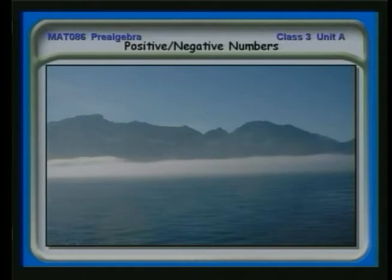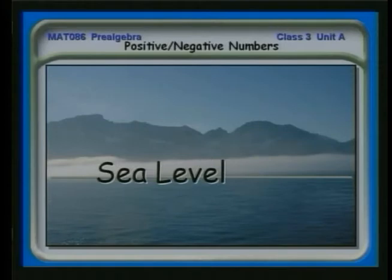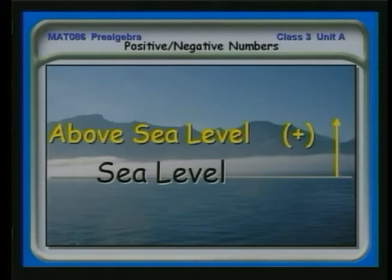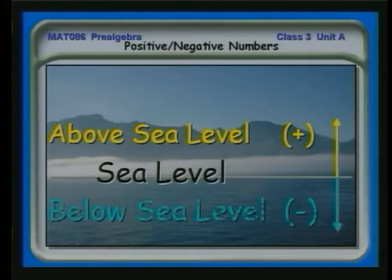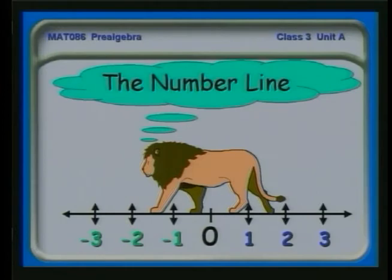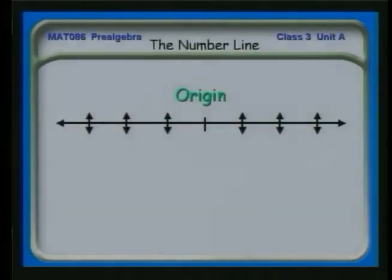Here's another one. You're looking at the ocean, and we can draw a line right at the shore — that's sea level. If you're talking about mountains, a mountain is so many feet above sea level — we can consider that positive. On the other hand, if we go down into the ocean, we can talk about negative. So we have positive and negative associated with sea level. To get these ideas set in our head, we use something called the number line, where we have zero in the middle, positive numbers to the right, and negative numbers to the left.